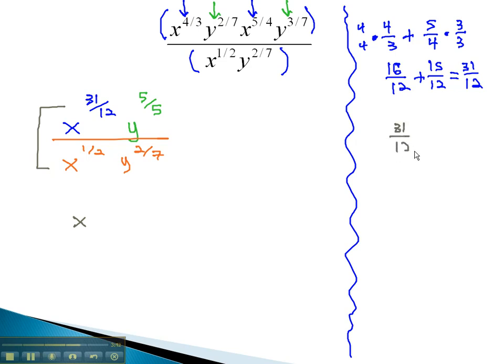31/12 minus 1/2 will have a common denominator of 12. We multiply by 6/6 to get 31/12 minus 6/12. And 31 minus 6 is 25/12. This is my new exponent on the x.